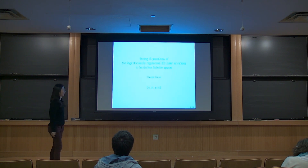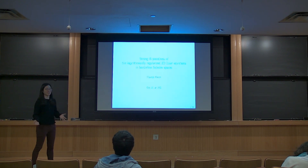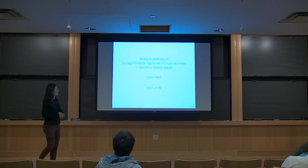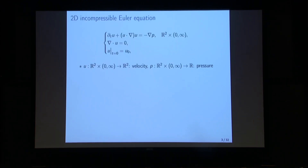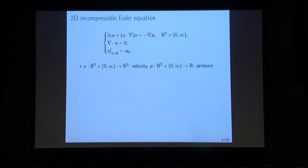Thank you very much for the introduction and invitation to the analysis seminar. As you see in the title, I'm going to talk about some ill-posedness results on 2D Euler type equations. So let's start with the 2D incompressible Euler equation. The equation describes the motion of incompressible inviscid fluid.